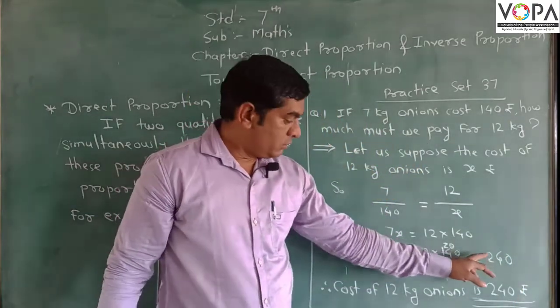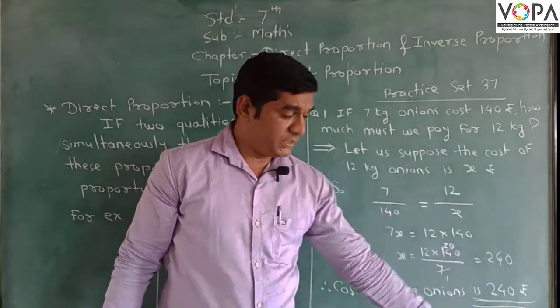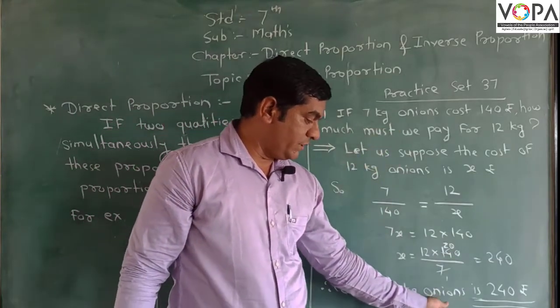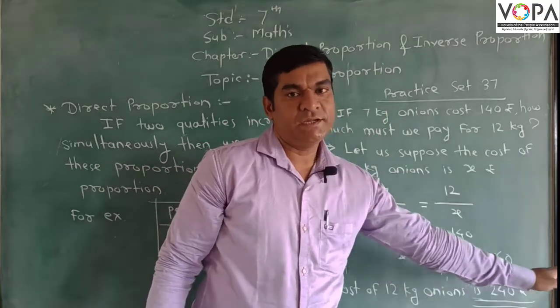12 into 20 is 240. So the answer for this question is: The cost of 12 kg onions is 240 rupees.